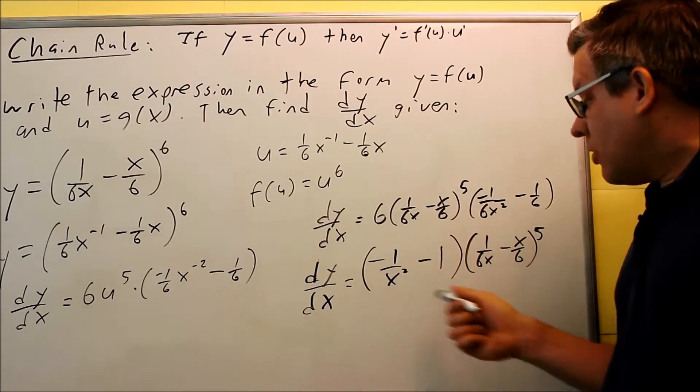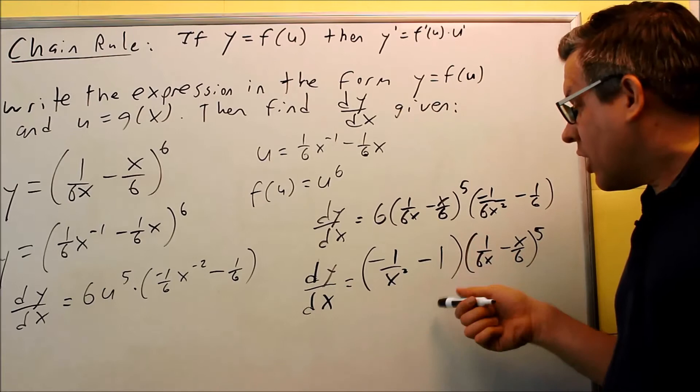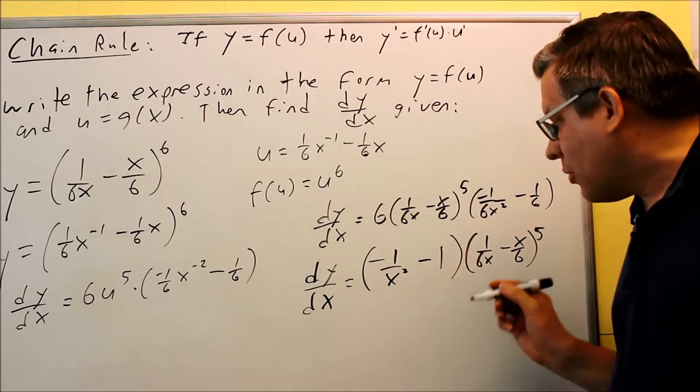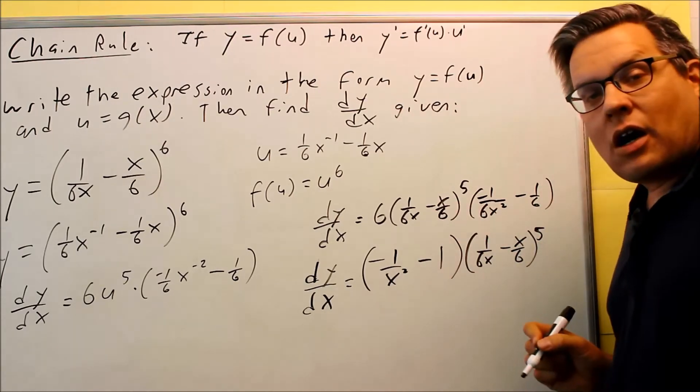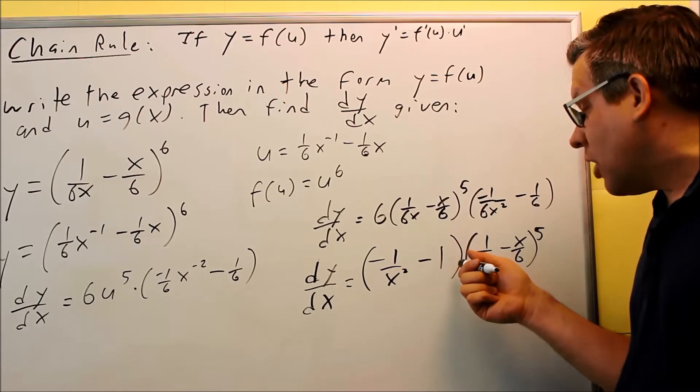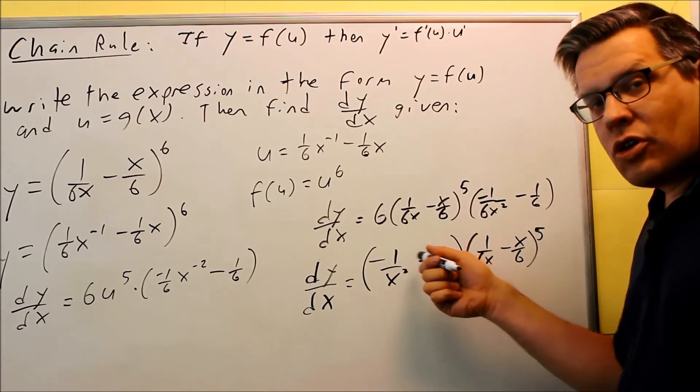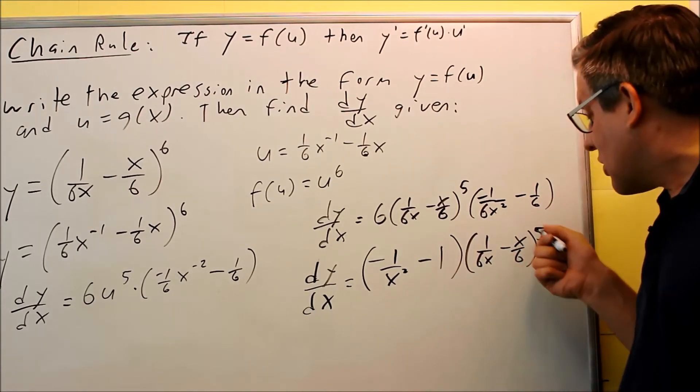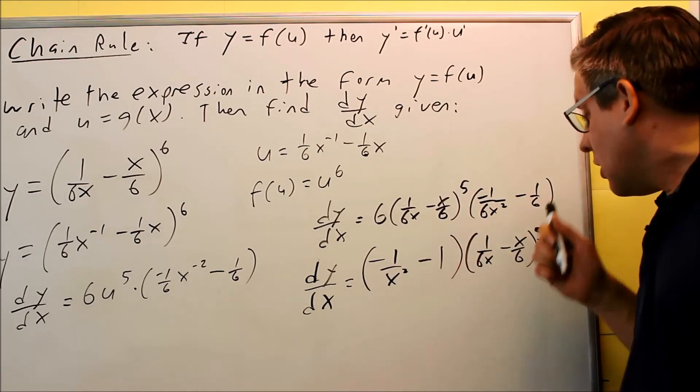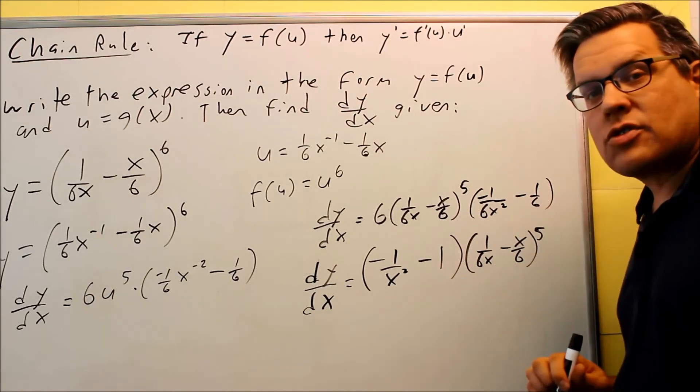So the only other thing that you could do with it, if you wanted to get common denominators here, since we're done working everything through, you certainly could do that. But this is okay. This answer is acceptable as well. So the only other thing, if you did do common denominators, you couldn't really multiply anything through because this is raised to the fifth power. So you can't do any foiling here because of the fifth power. So we'll just leave our answer in that form.